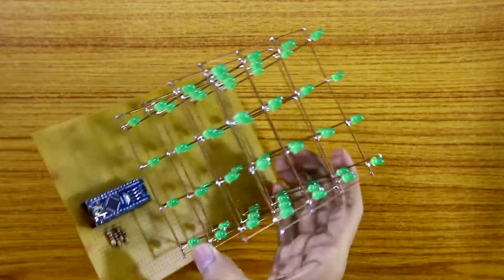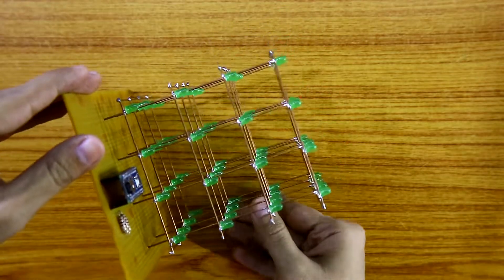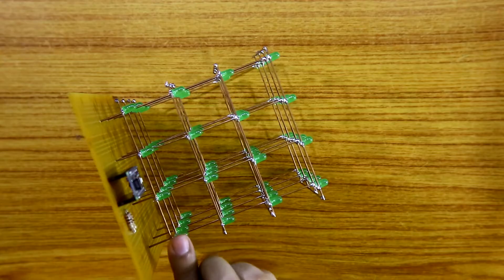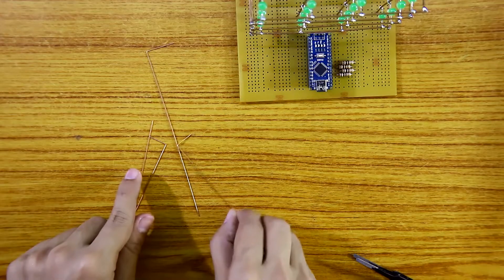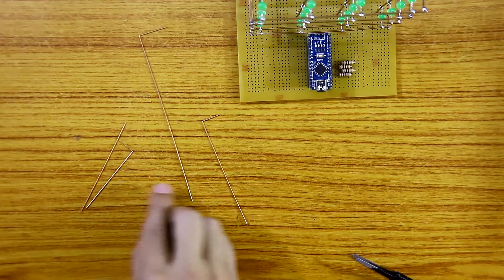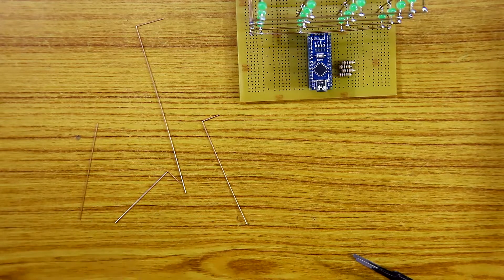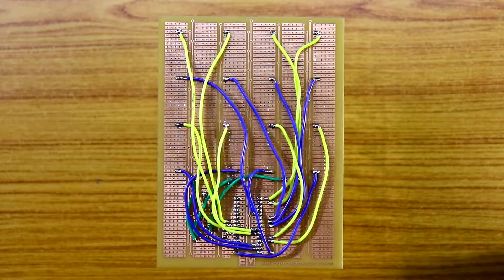Now it's time to solder all the layers - layer one, layer two, layer three and layer four. We need this for first layer, second layer, third layer and fourth layer.